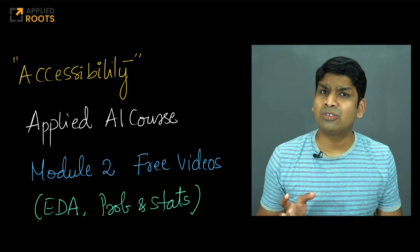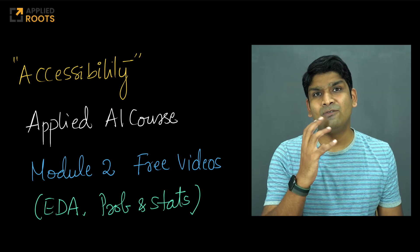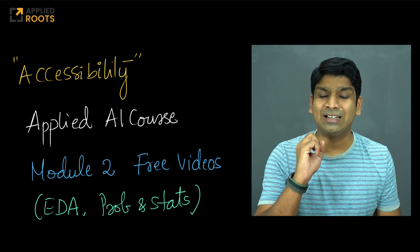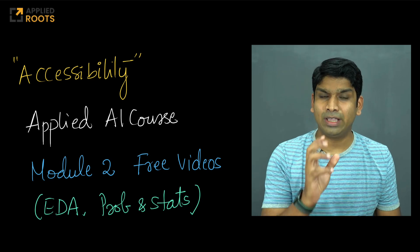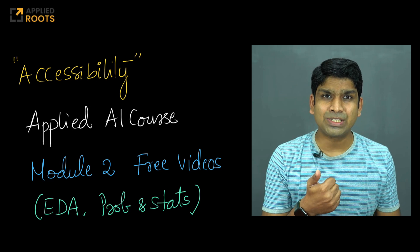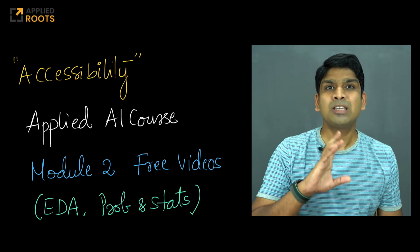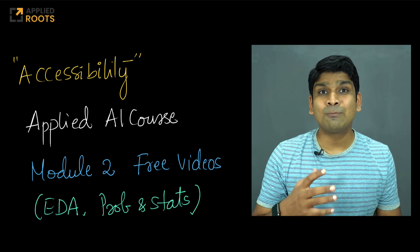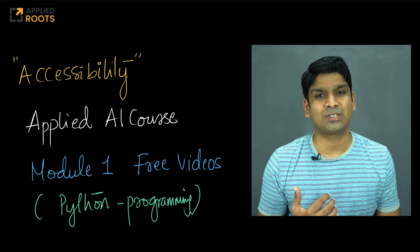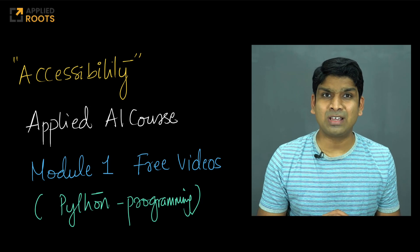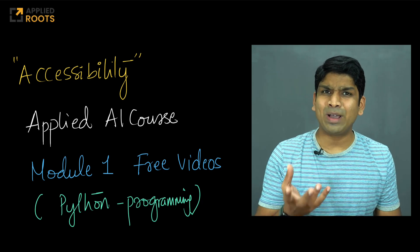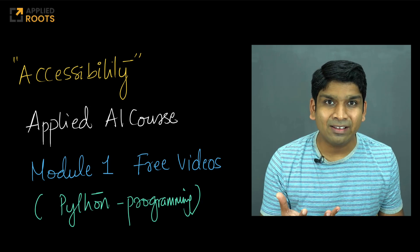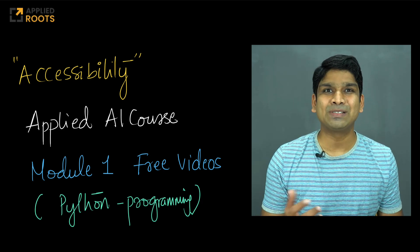If you have forgotten some basic probability from your 11th and 12th class or undergraduate studies, we have free videos at Applied AI course — just go to appliedaicourse.com, log in free of cost, and watch the videos in Module 2, including the exploratory data analysis and probability and statistics chapters. That will be a good recap. Similarly, if you have forgotten basic Python programming, we also have free videos in Module 1 at Applied AI course — just revise those concepts so you can participate in the code exercises, debugging, and simulations.